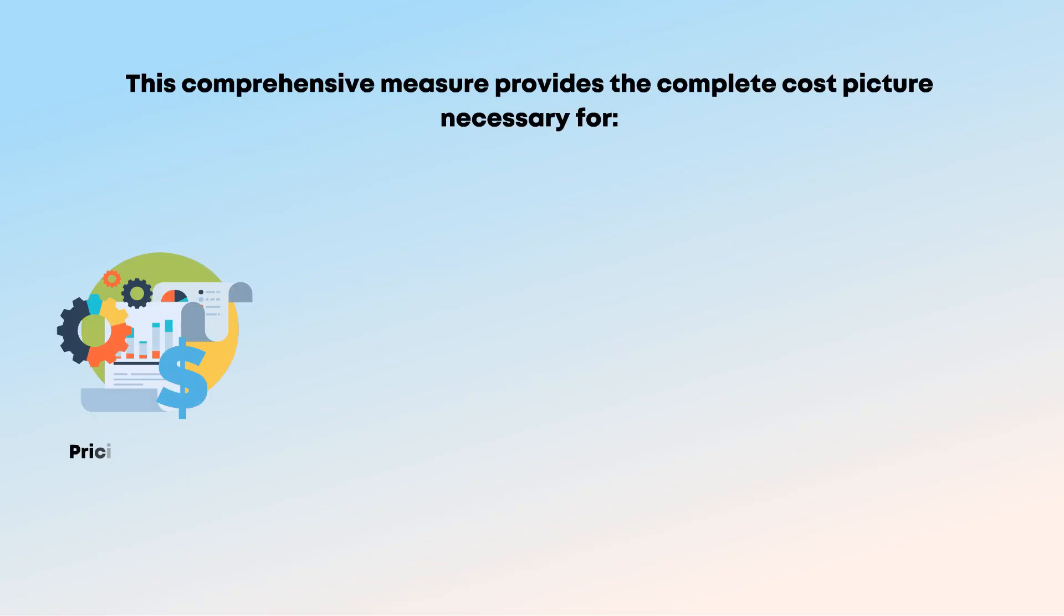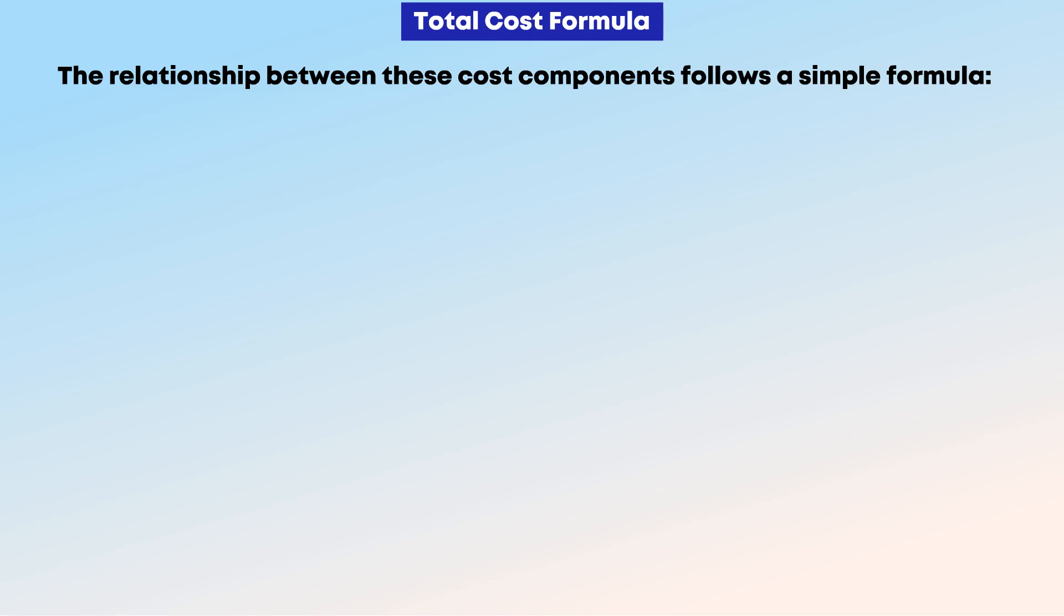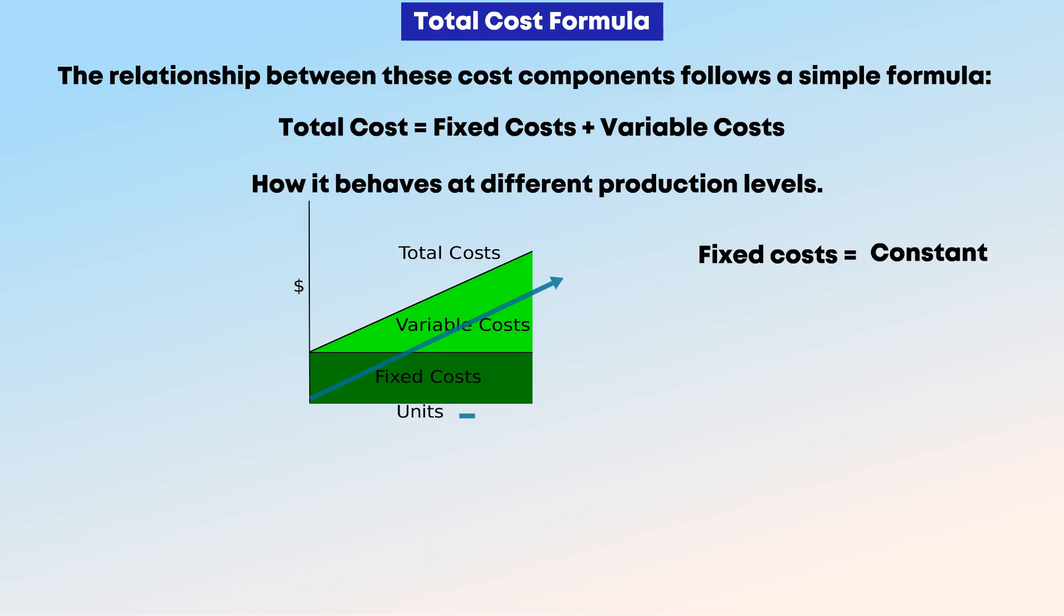Total cost: The complete picture. Total cost represents the sum of all fixed and variable costs incurred by a business during a specific period. This comprehensive measure provides the complete cost picture necessary for pricing decisions, profitability analysis, and strategic planning. The total cost formula: The relationship between these cost components follows a simple formula. Total cost equals fixed costs plus variable costs. This straightforward equation becomes more nuanced when you consider how it behaves at different production levels. While fixed costs remain constant, variable costs change with output, causing total costs to rise as production increases.